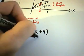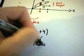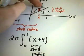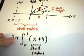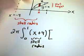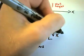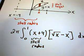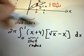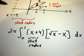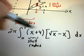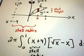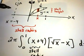So the shell radius is x + 4. The shell height is the top curve minus the bottom curve — just like finding areas between curves — which gives us √x − x. This is the integrand to evaluate. The integral is a little tedious, but you just multiply it out; the powers of x let you use the basic power rule. That's the complete setup for rotating this region about x = −4.